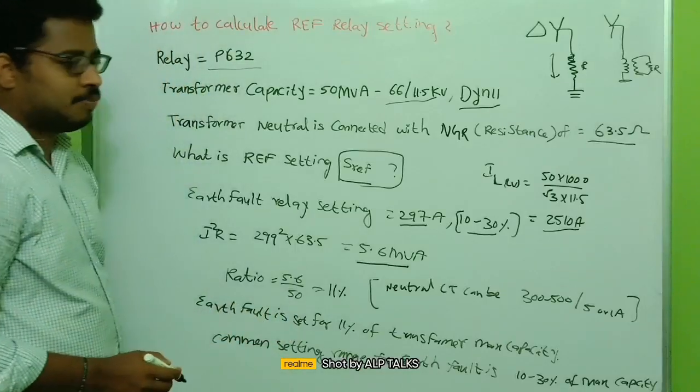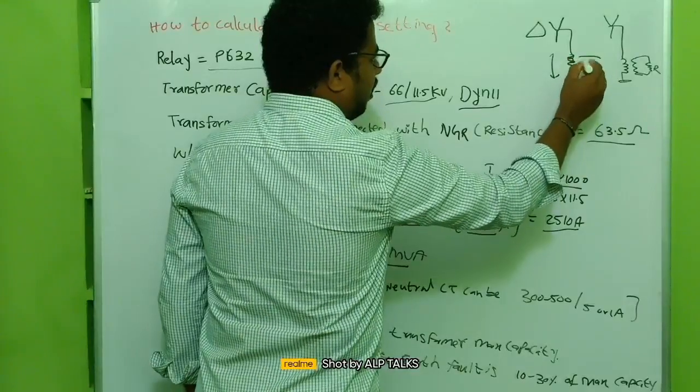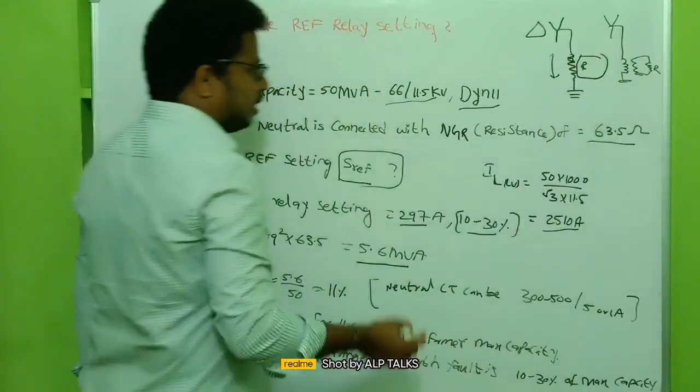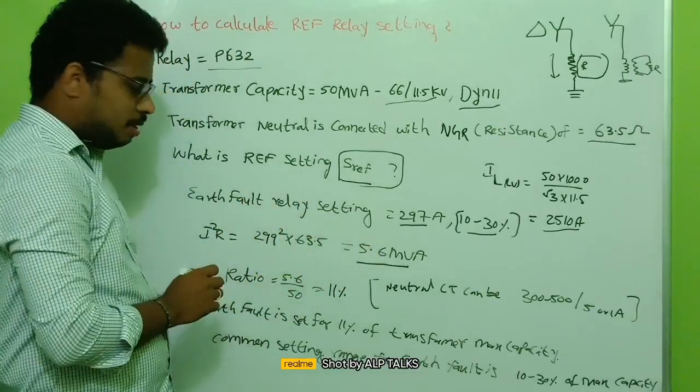So it is considered as 5.6 MVA. So 5.6 MVA setting is considered in this relay, whatever relay we have here. In this resistance, in the relay, we will consider 5.6 MVA apparent power.